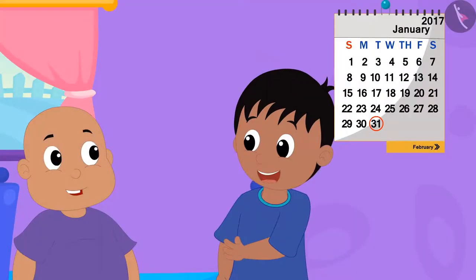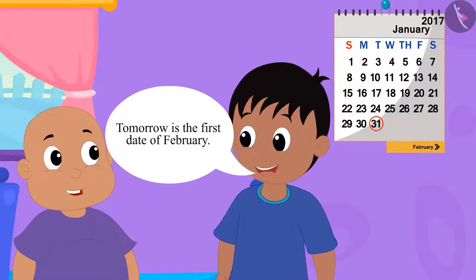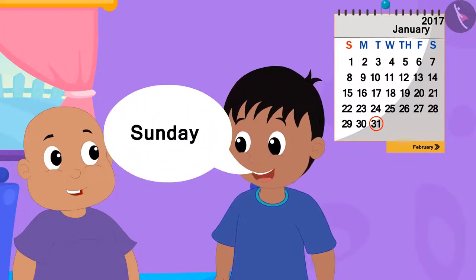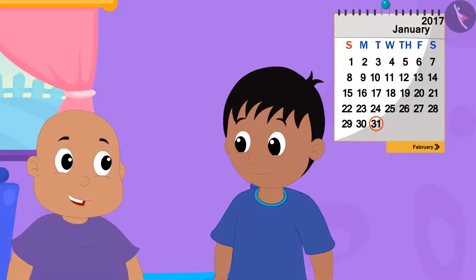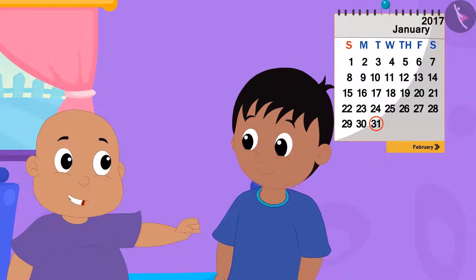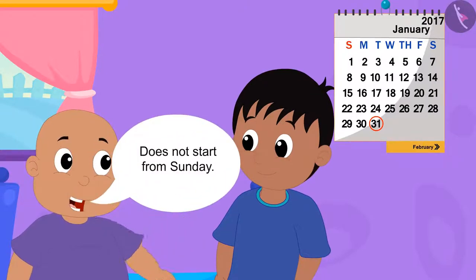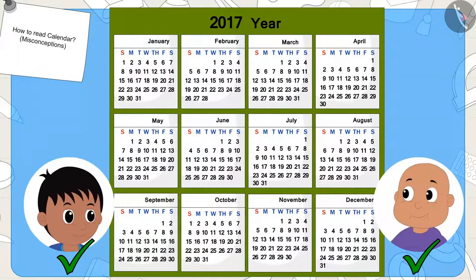Raju is telling Bablu that tomorrow is the first date of February, so tomorrow will definitely be Sunday. Bablu started laughing at Raju. Bablu said that every month does not necessarily start on Sunday. Children, who do you think is right — Raju or Bablu?